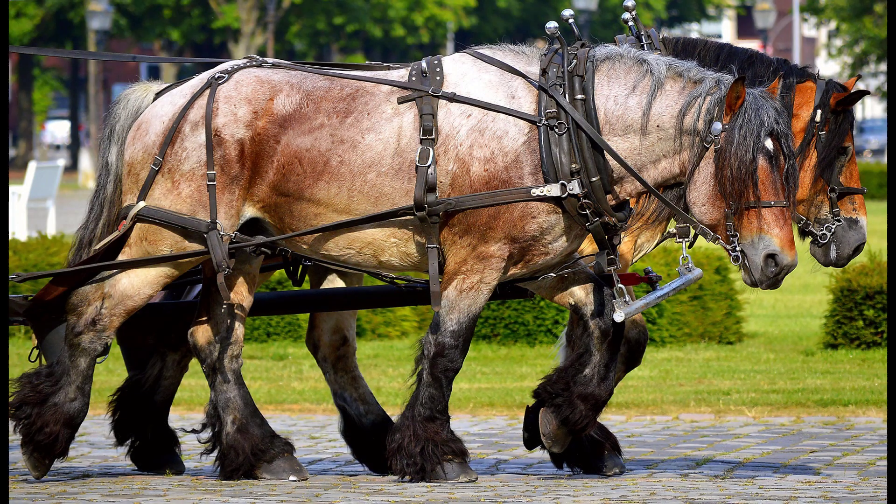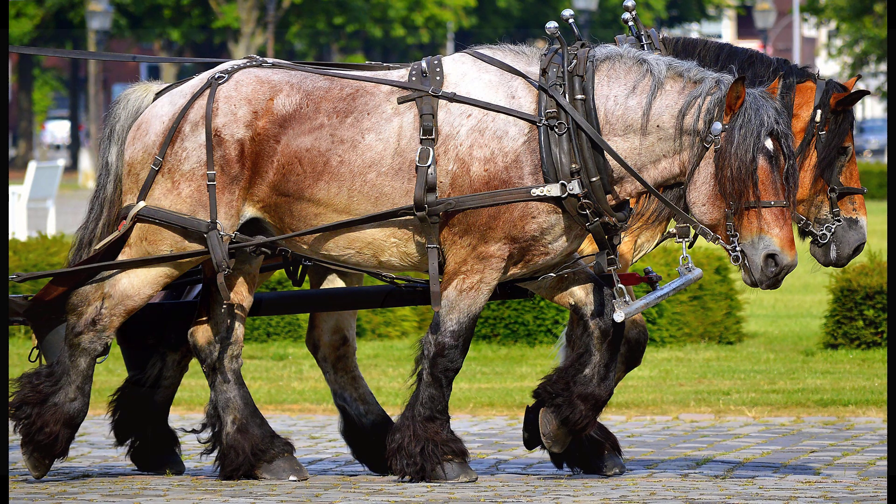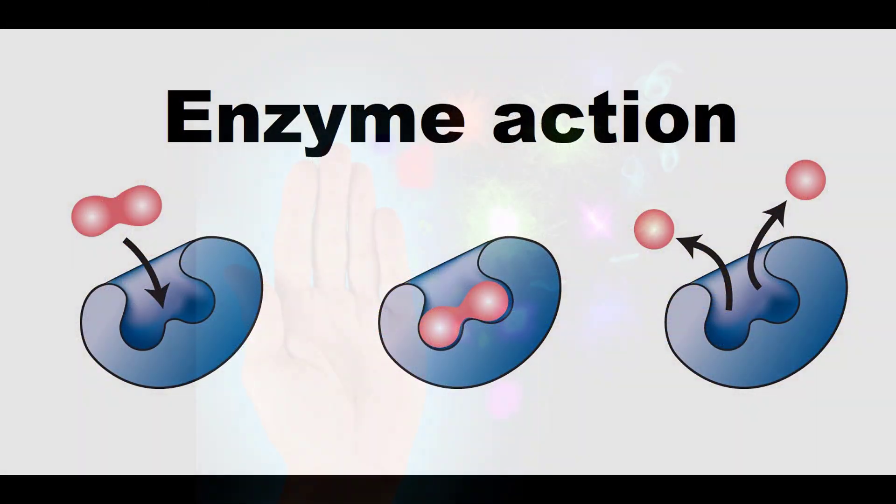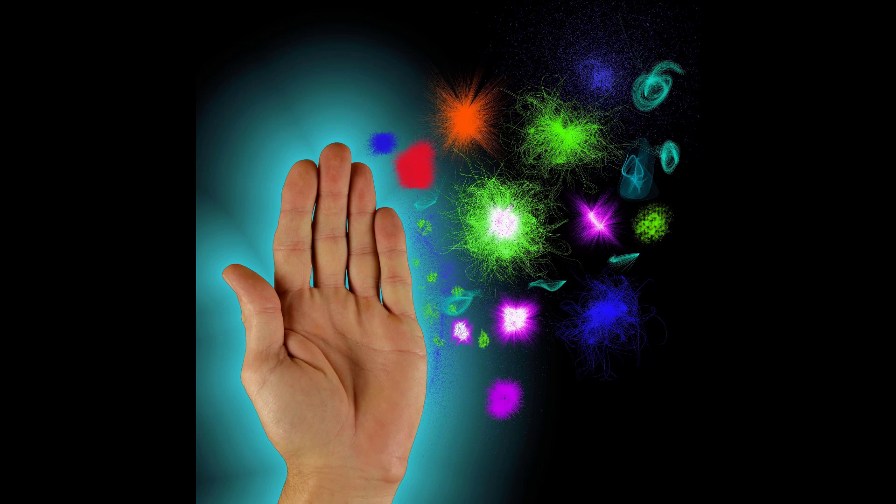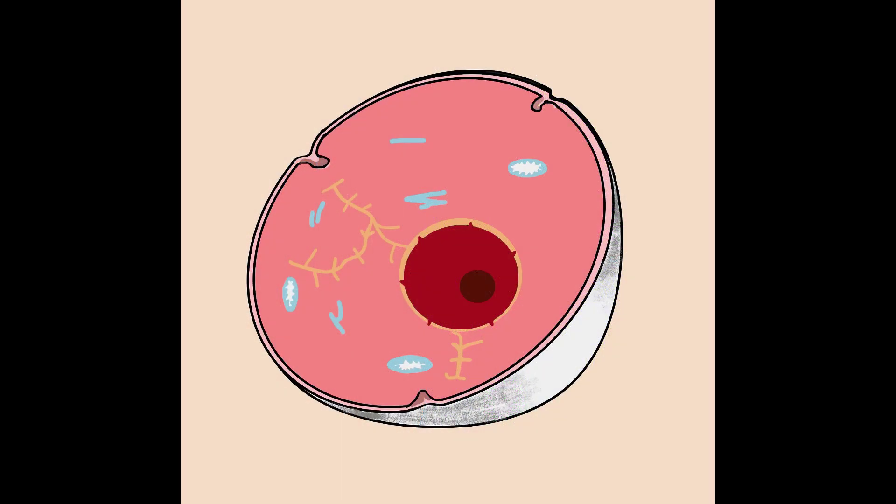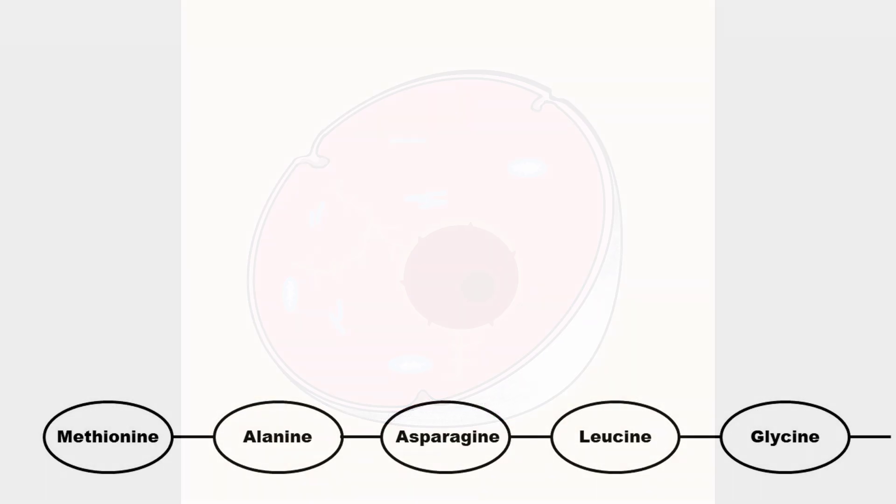Now proteins are basically like the workhorses of your cells. They can act as enzymes. They can be antibodies against infections. They might maintain the structure or shape of the cell. But proteins aren't just five amino acids long. They're typically a lot longer, often hundreds of amino acids long.